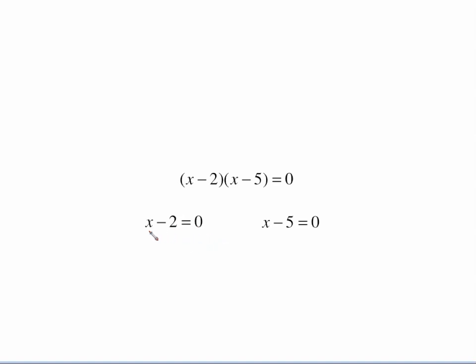x minus 2 equals 0. To get the x alone, we do the opposite, which is add 2 to both sides. Same thing with the x minus 5, do the opposite, which is add 5 to both sides, which is going to give us these solutions: x equals 2 and x equals 5.